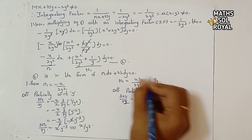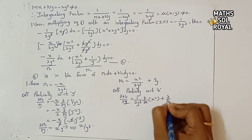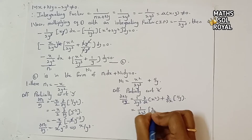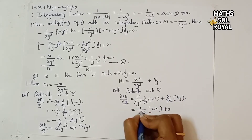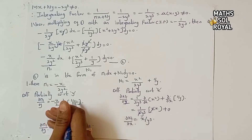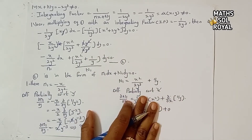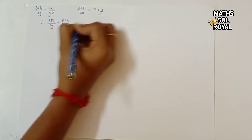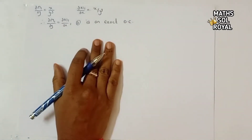Differentiating N₁ partially with respect to x — y is constant: ∂N₁/∂x = (1/(2y³))·(∂/∂x)(x²) + (∂/∂x)(1/y) = (1/(2y³))·2x + 0 = x/y³. Since ∂M₁/∂y = ∂N₁/∂x = x/y³, equation 2 is an exact differential equation.